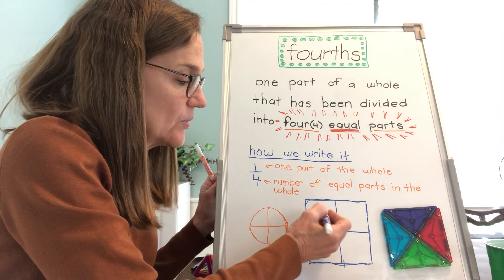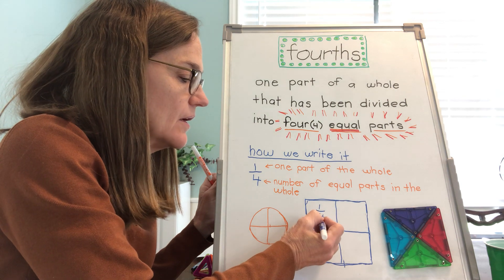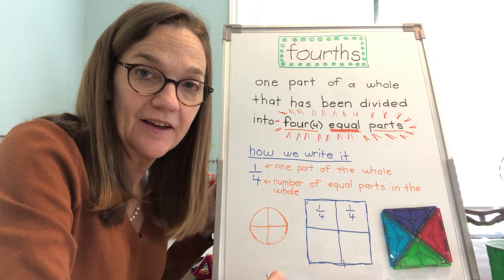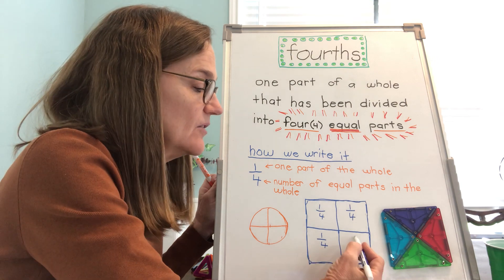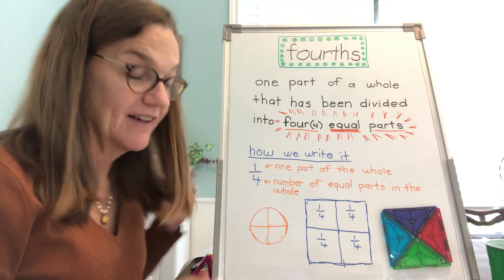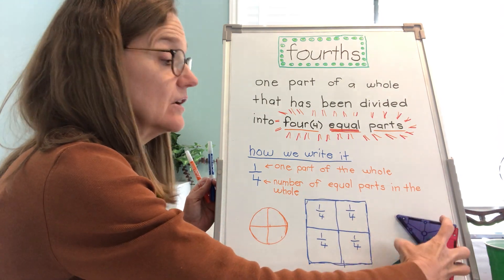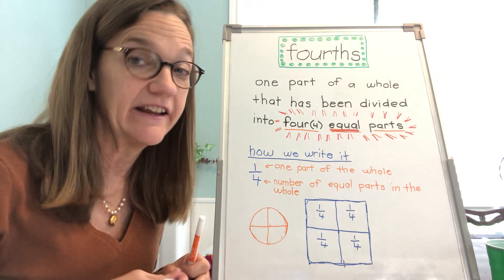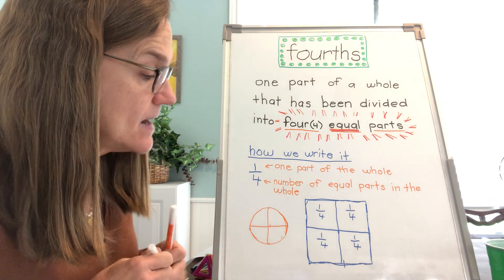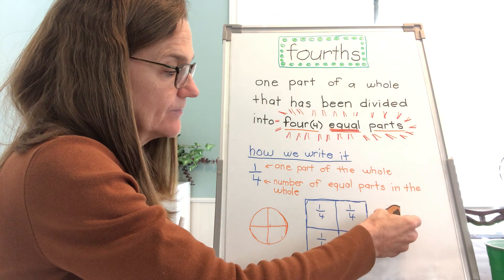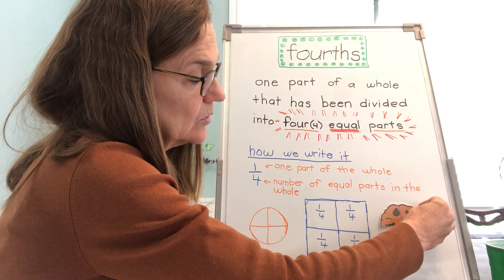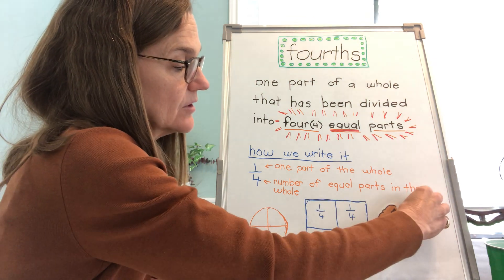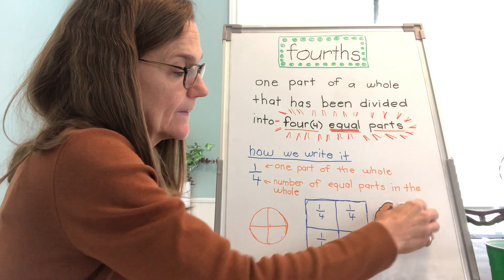And there we have fourths — one, two, three, four. Each part is one fourth. This piece by itself is one fourth, this piece by itself is one fourth, this piece by itself is one fourth, and this piece by itself is one fourth. We see there are different ways to divide some shapes. Some shapes can't be divided evenly into fourths — like our heart, we couldn't divide a heart evenly into fourths. We've divided the cookie into four equal pieces.